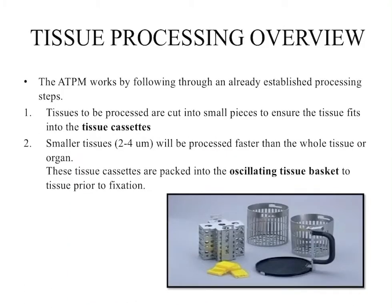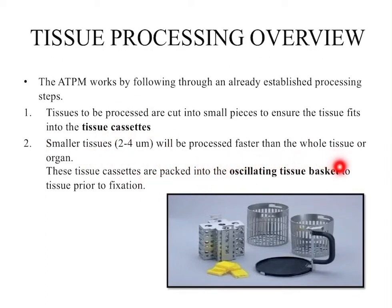Tissue processing overview. How is this process done? The tissue which we process will be cut into small pieces. Smaller tissue, that is 2 to 4 micrometers, will be processed faster than whole tissue or an organ. If there is a whole tissue or organ, it will take more time because it takes more time to retain the reagent in that. If it is a smaller size, it will take less time.